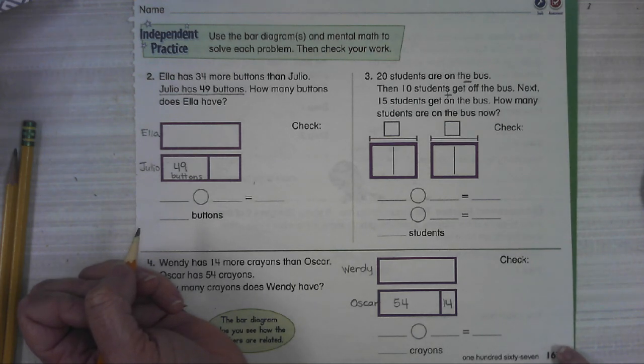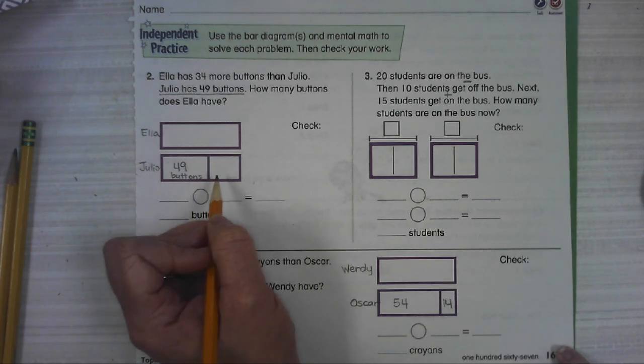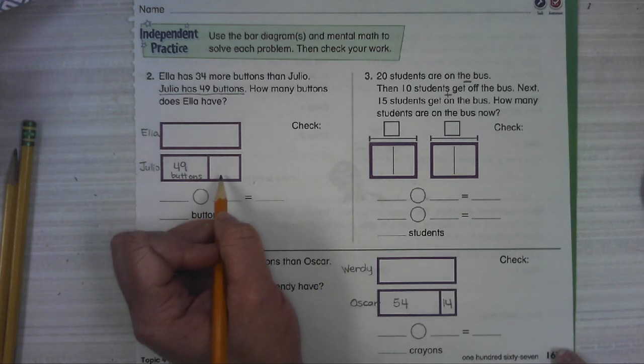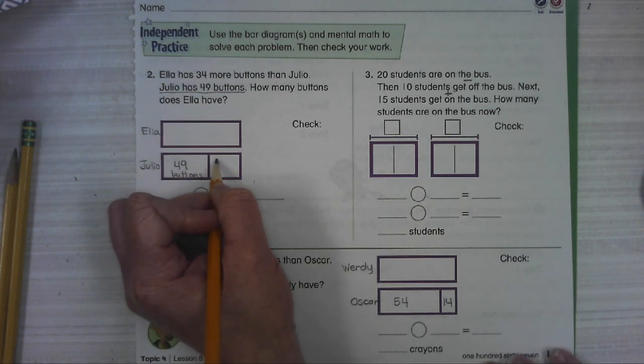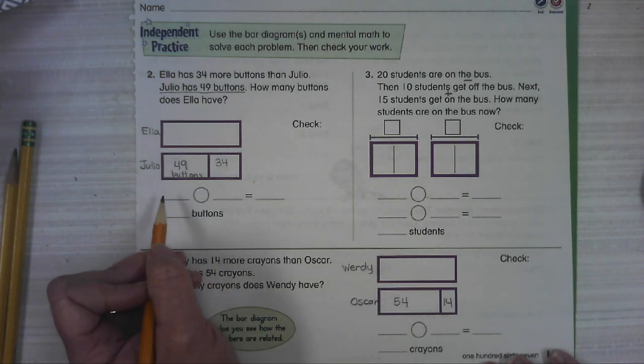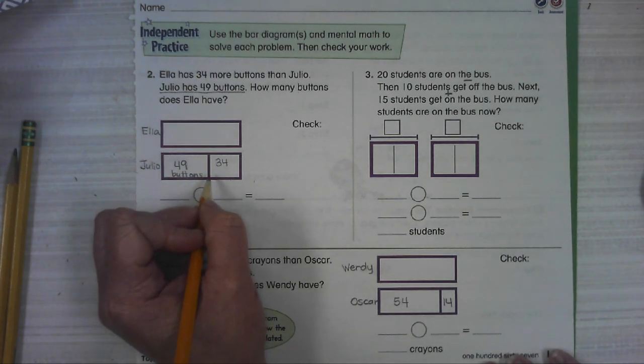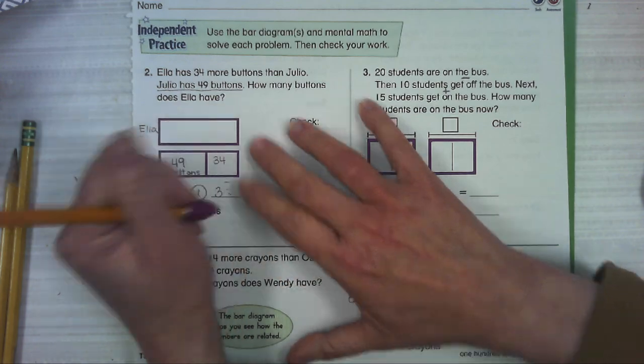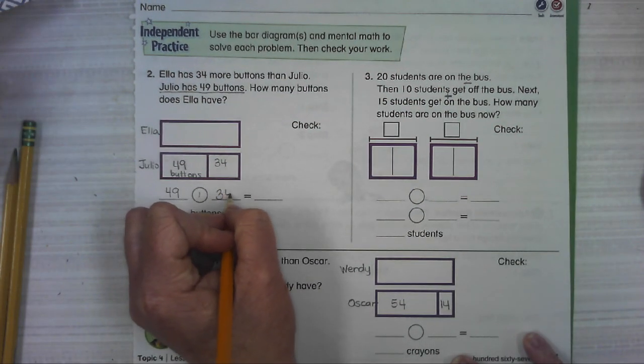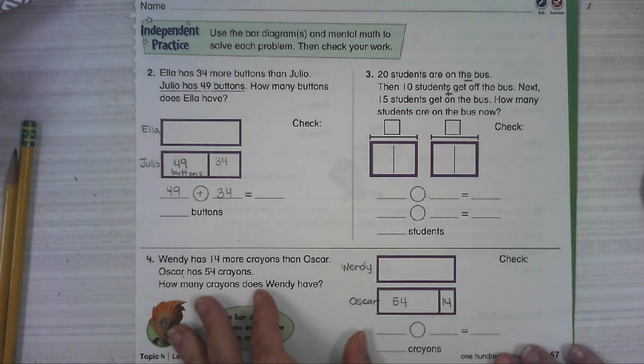Okay, Ella has 34 more than Julio. So this space over here is showing us how many more Julio would need to be the same as Ella. So if he had 34 more, he and Ella would be the same. So we need to put 49 and 34 together and find what that sum is.